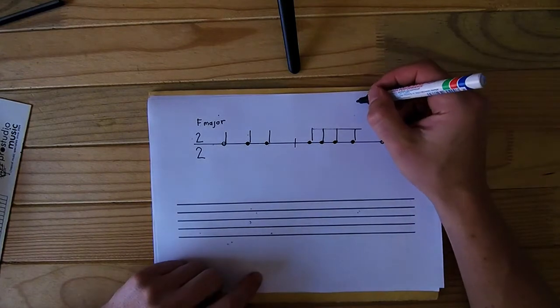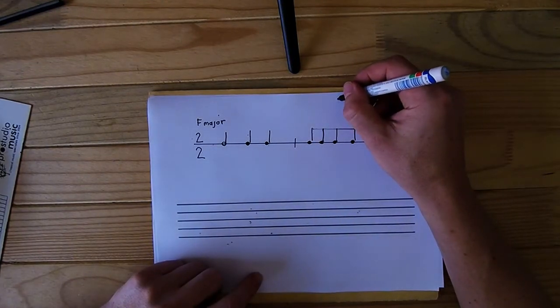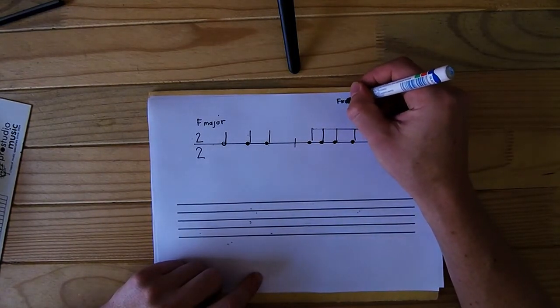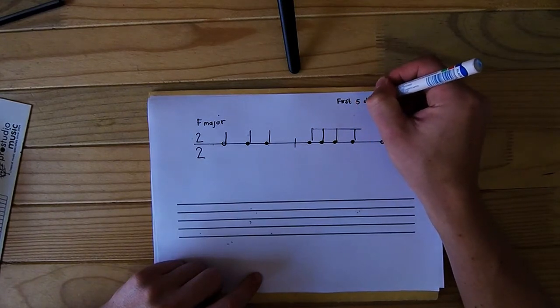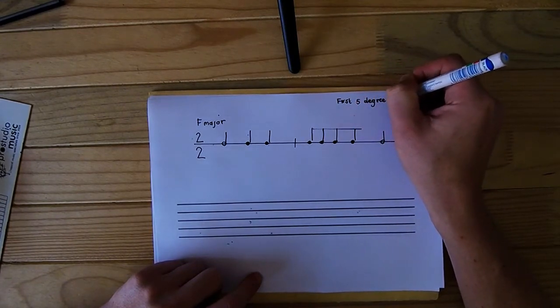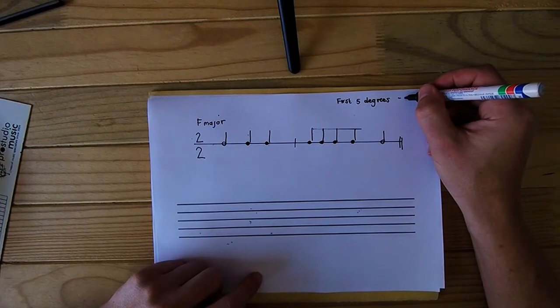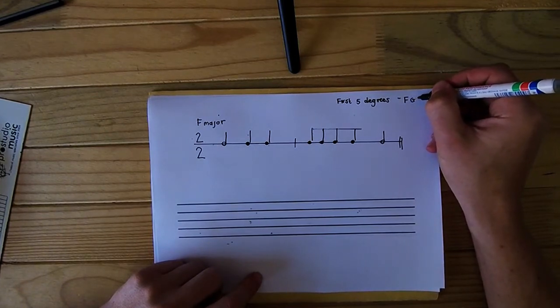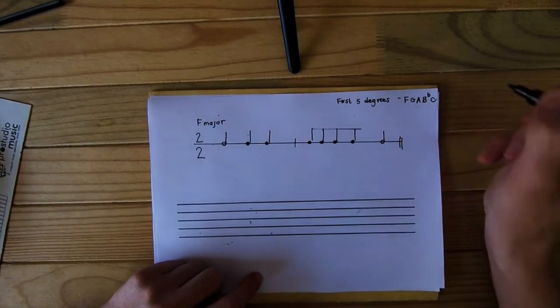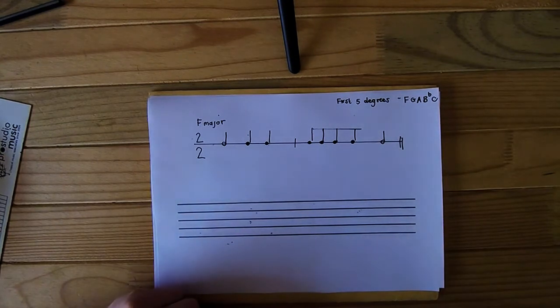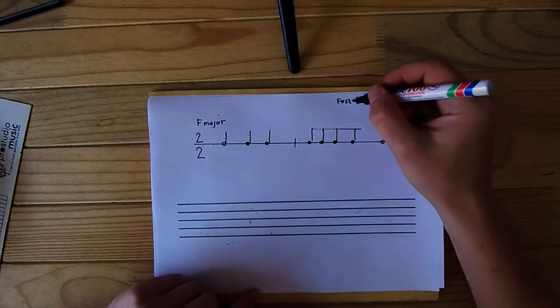Now remember, the first five degrees, in this case we're going to use the first five degrees of the scale given. In this case it can be F, G, A, B flat, or C. Remember, F major has a B flat.